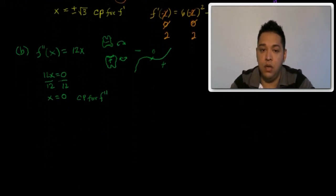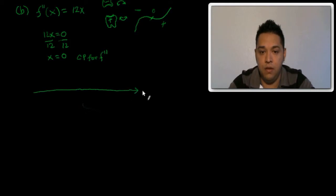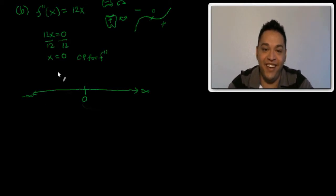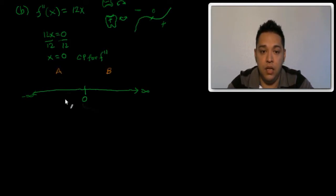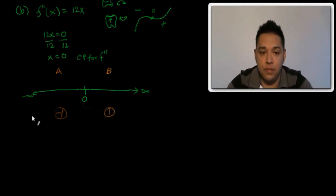Just like before, we draw a number line from negative infinity to infinity. We have one critical number, which is zero. That gives us two test regions — region A and region B. Our test points will be negative one and one.